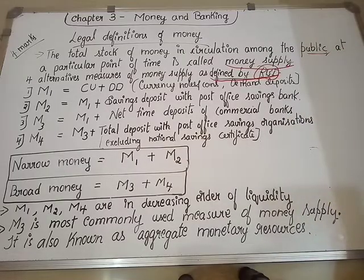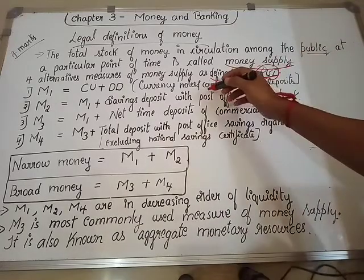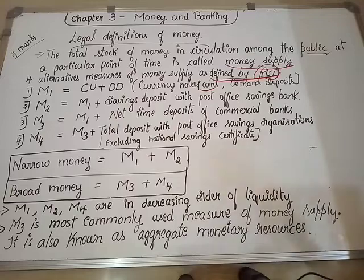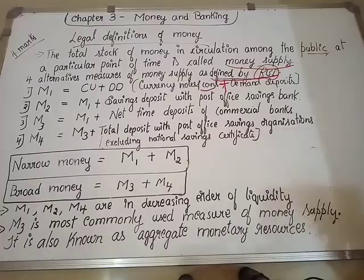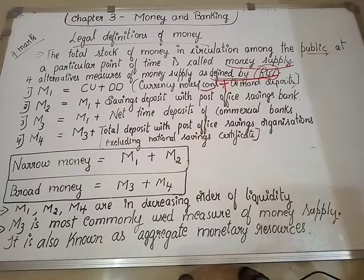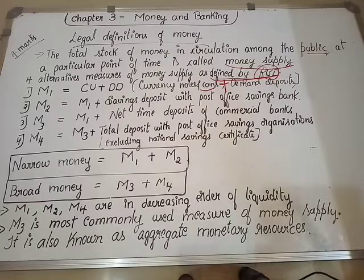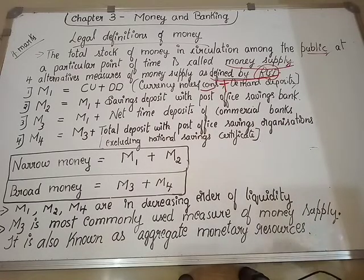What is M1? M1 considers CU plus DD. CU is nothing but currency notes and coins in the economy. DD is demand deposits — deposits that are payable on demand, which can be withdrawn by the depositor at any time. Term deposits are not included here. So M1 = currency notes and coins plus demand deposits.